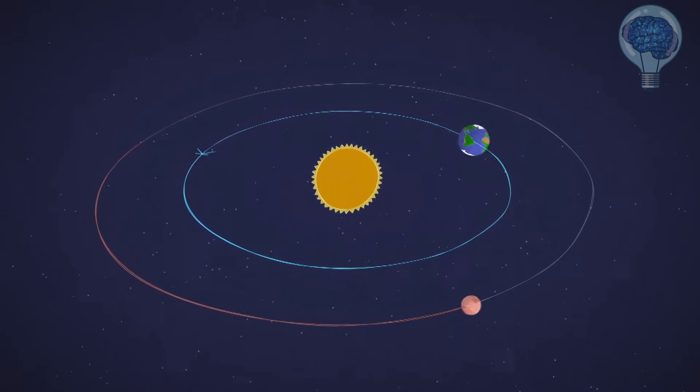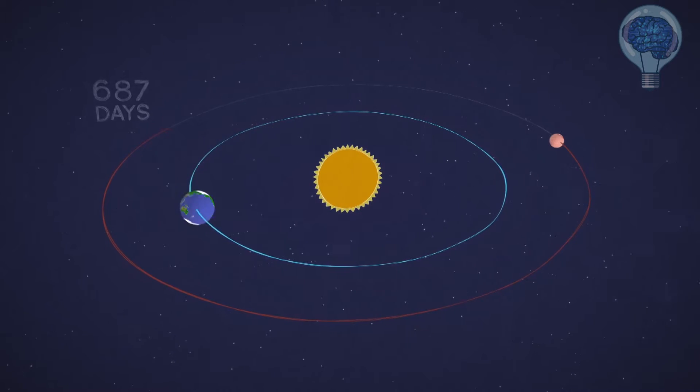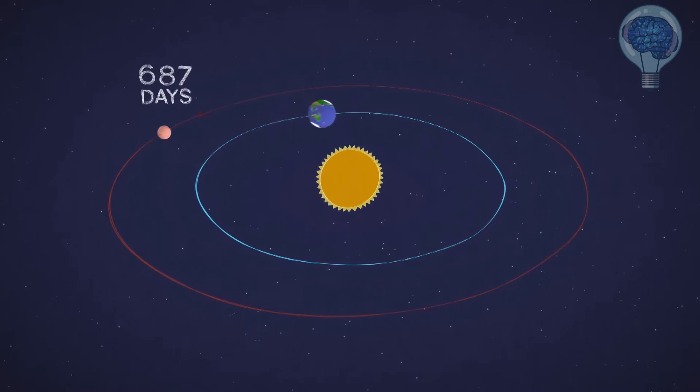Mars is a little slower and farther from the Sun, so a full circuit takes 687 Earth days, or one Mars year.